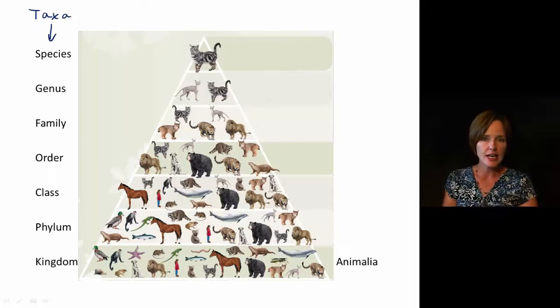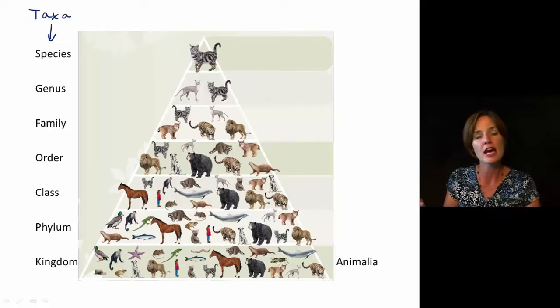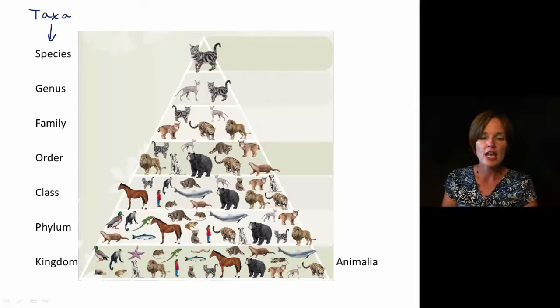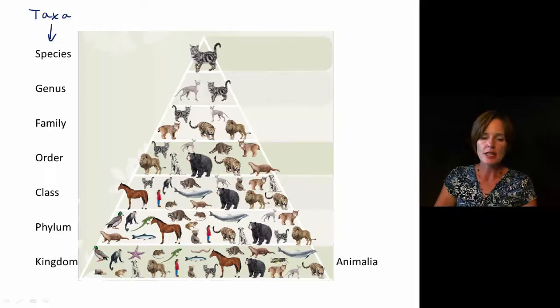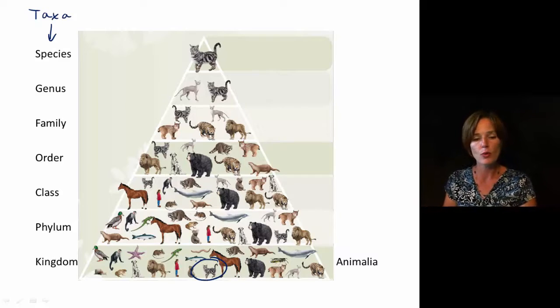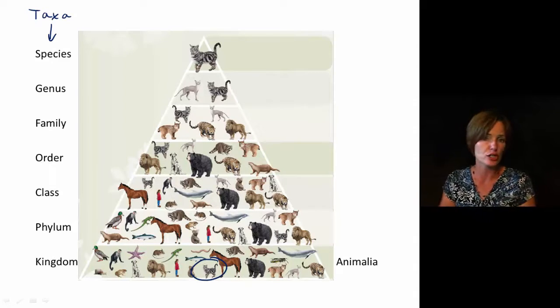Now that kingdom, that layer, is going to include every single animal that we do know of or that has been described. So that does include a lot of diversity, a lot of organisms that are really quite different from each other. You can see that we have a cat, but then we also have things like human beings, earthworms, a wasp, a snail, a starfish. So a lot of very different organisms.